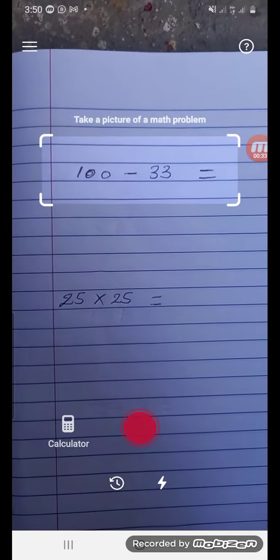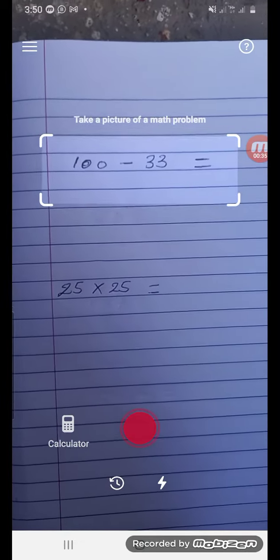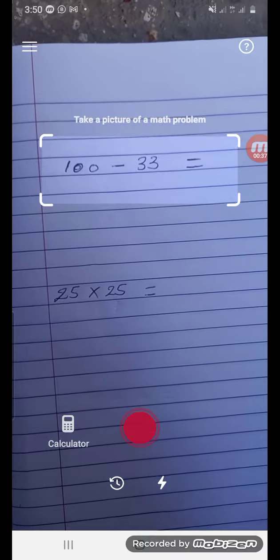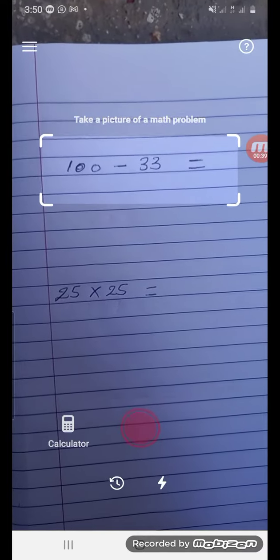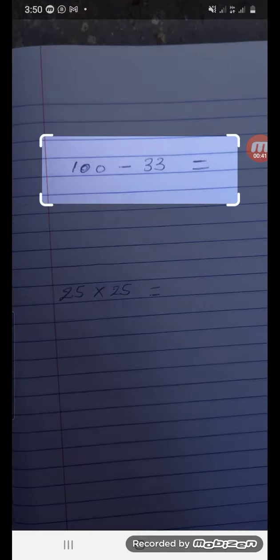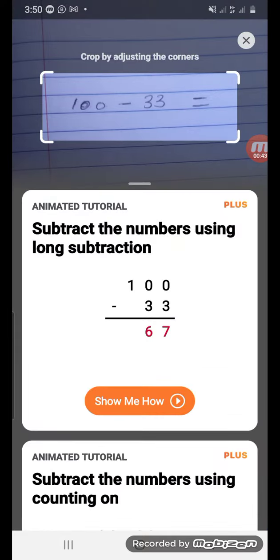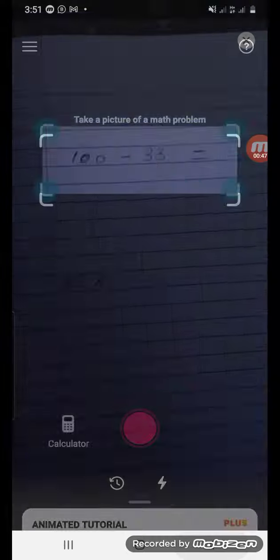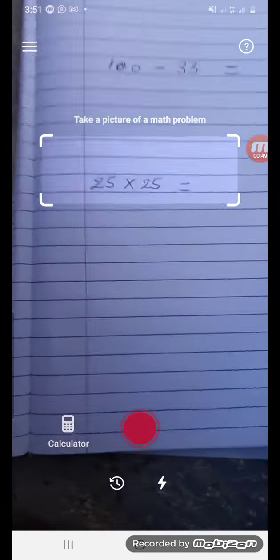100 minus, or subtract, 33. I'll tap on the red circle to do the math for you. As you can see, it's scanning, and the answer is 67. So let's do another one.